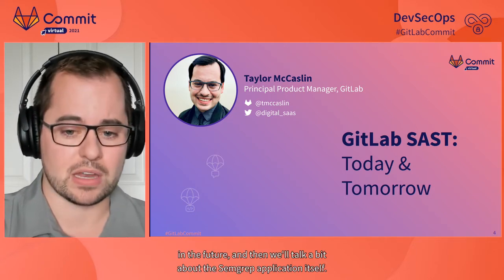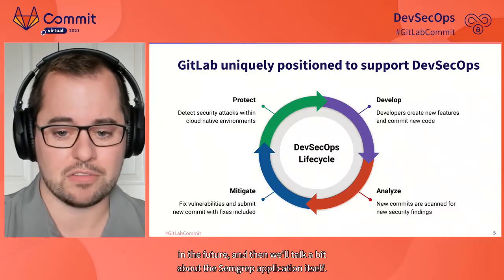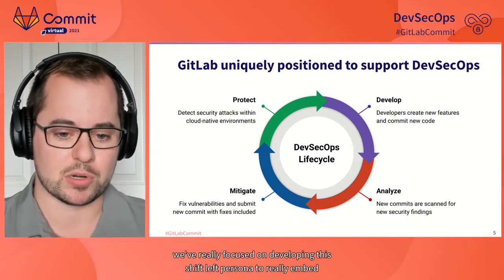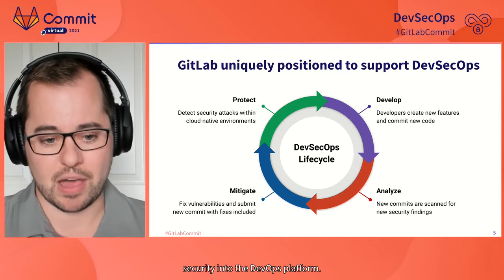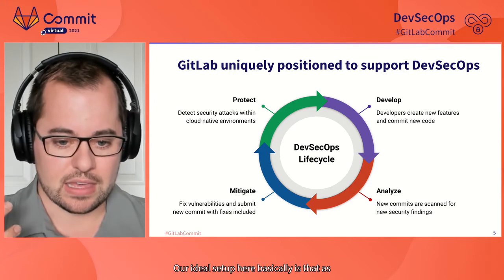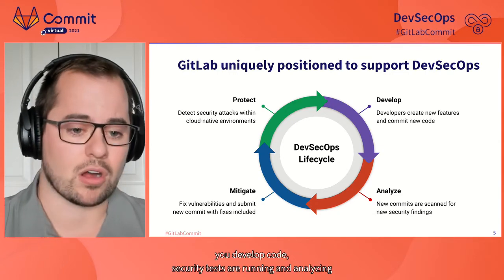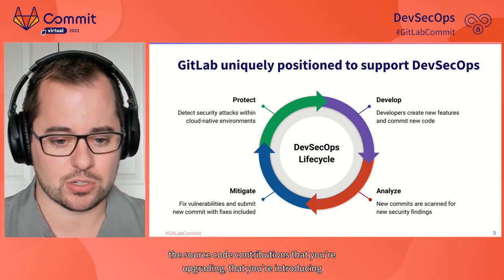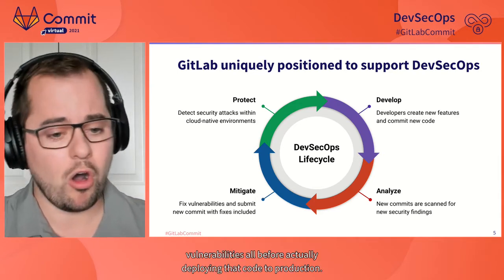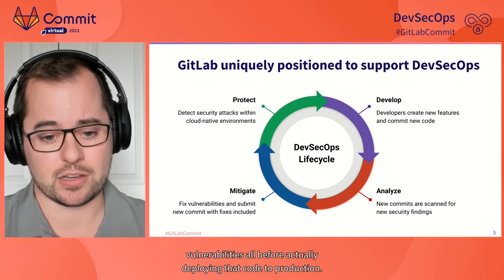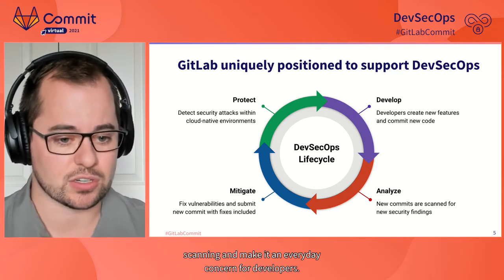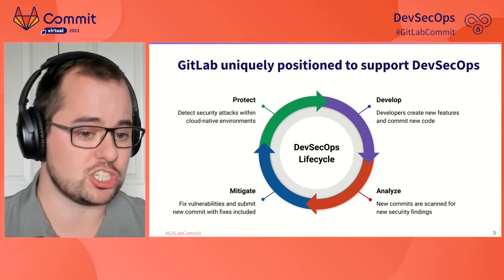In terms of GitLab SAST, we've really focused on developing this shift-left persona to embed security into the DevOps platform here at GitLab. Our ideal setup is that as you develop code, security tests are running and analyzing the source code contributions you're introducing with your code commits. You're then able to mitigate those vulnerabilities all before actually deploying that code to production. We're really trying to embed security scanning and make it an everyday concern for developers — you may have heard this referred to as 'shift left.'